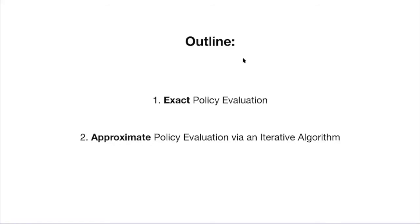The outline for today covers two algorithms, both very simple — essentially one-line algorithms. The first is exact policy evaluation: we derive formulations that exactly return V-pi. The second is an approximate algorithm that returns something approximating V-pi. We trade accuracy for computation — the approximate policy evaluation algorithm runs faster.